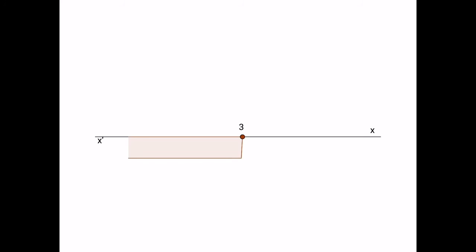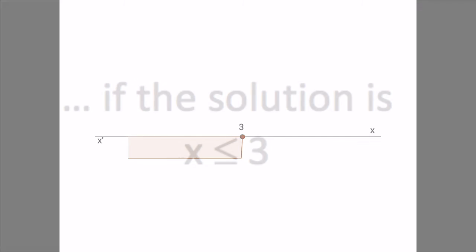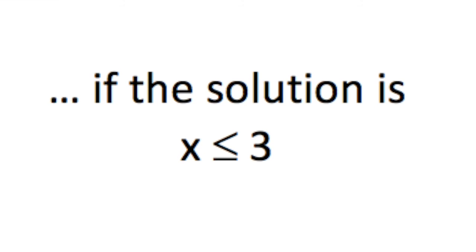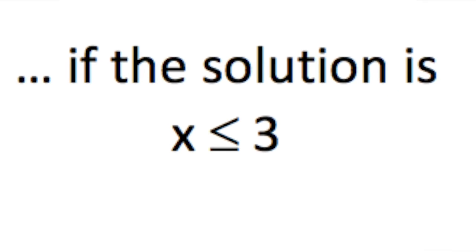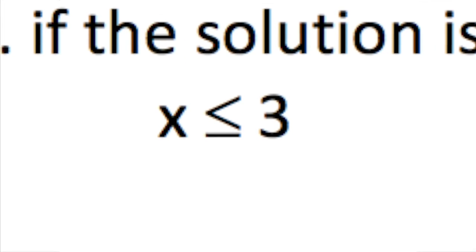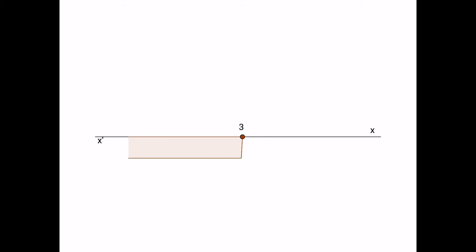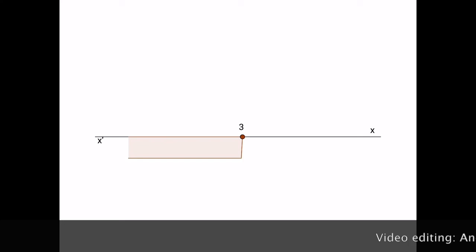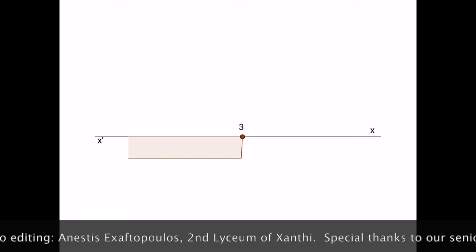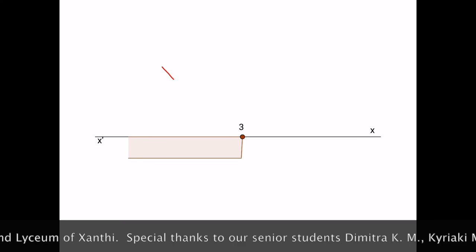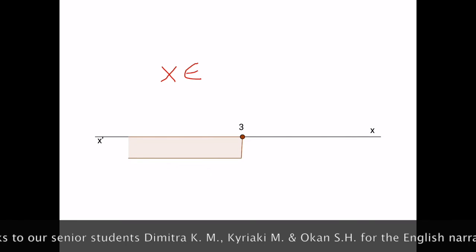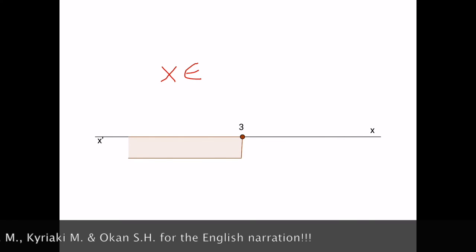If now, by solving an inequality, we arrive at x less than or equal to 3, then 3 is included in the solutions, and this, in the axis, is shown by the full dot and the vertical line that then turns to the side of the solutions. The corresponding symbolism for the solutions interval is the square bracket and the word closed, that is to say x belongs to the minus infinity comma 3 closed interval.